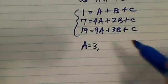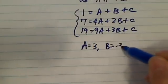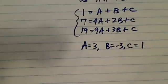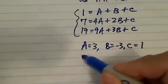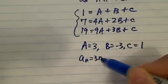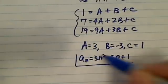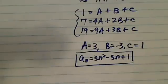So a equals 3, and b is equal to minus 3, and c is equal to 1. I believe that's the answer. So what we can do here, then you can have an is 3n squared minus 3n plus 1. That's the formula. So this is the analytical method.